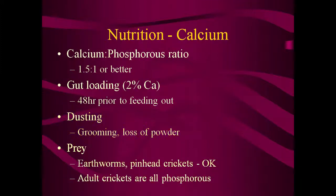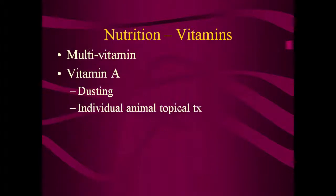Some prey items such as earthworms and possibly pinhead crickets have a better calcium-phosphorus ratio and may not need gut loading or dusting, but adult crickets are mostly phosphorus. Vitamin supplements may also be required depending upon the species of amphibian and the prey being fed. In particular, vitamin A is often deficient and leads to health problems if the diet is inadequate. Dusting prey items with crushed beta-carotene tablets is often used, though in some cases individual animal treatment with topical vitamin A may be required.